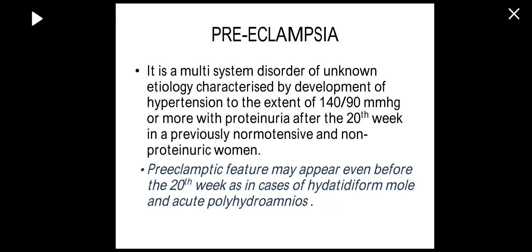Preeclampsia is basically a multi-system disorder of new etiology characterized by development of hypertension to the extent of 140/90 mmHg or more, with proteinuria, after 20 weeks of pregnancy in a previously normotensive and non-proteinuric patient. Preeclamptic features may occur before 20 weeks in cases of hydatidiform mole, acute polyhydramnios, and multiple pregnancies.